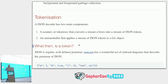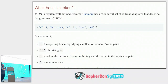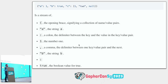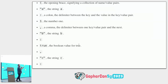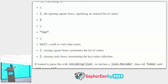What is a token? Breaking down a JSON object, we have the opening curly signifying key-value pairs, the string 'A', a colon, the number one, a comma, another string, a colon, boolean true (not the string 'true'), a comma, another string, a colon, the square brace indicating an array, then number one, a comma, string 'two', a comma, null, close array, close brace.